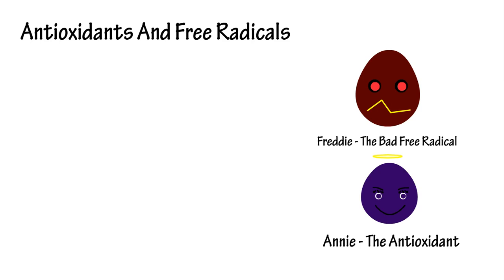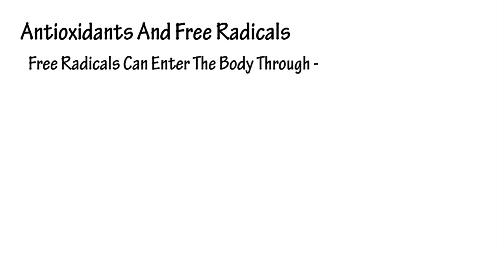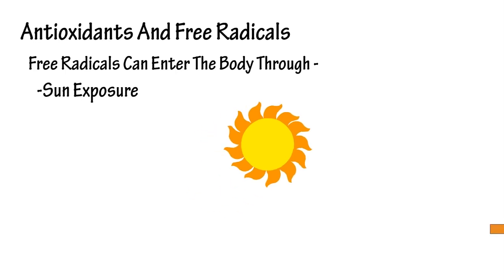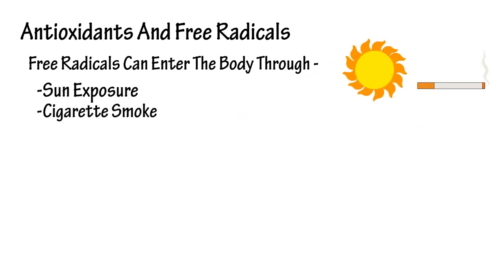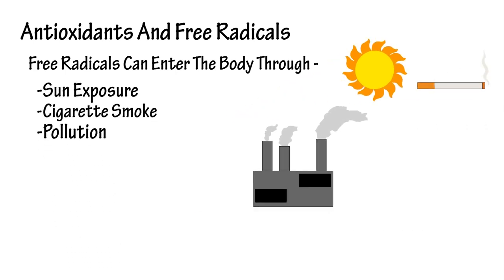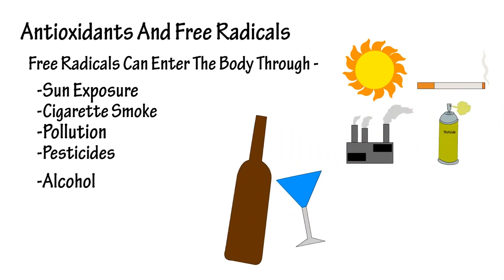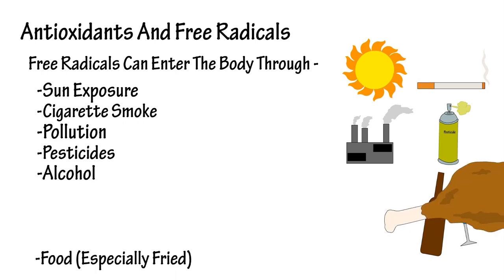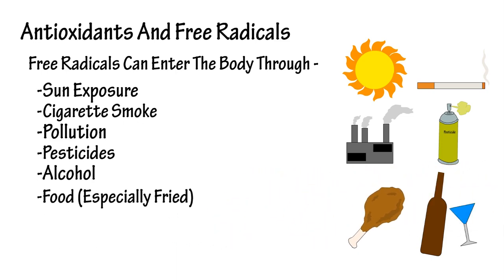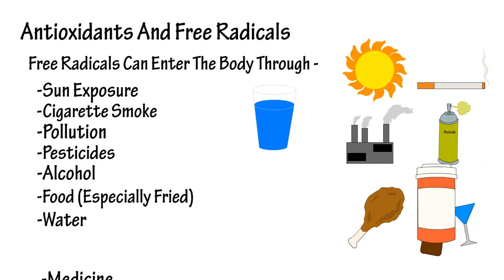Now that we have a general understanding of antioxidants and free radicals, let's look at some of the ways they enter the body. Free radicals can enter the body through sun exposure, cigarette smoke, pollution, pesticides, alcohol, food — especially fried food — water, and even from medicines we take.